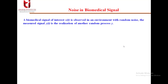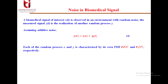A biomedical signal of interest X(t) is observed in an environment with random noise. The measured signal Y(t) is the realization of another random process: Y(t) = X(t) + η(t), where X(t) is the signal of interest and η(t) is the random noise. Each random process X and Y is characterized by its own probability density function — p_X(x) and p_Y(y) respectively.